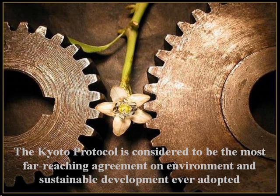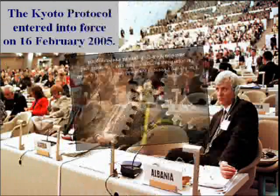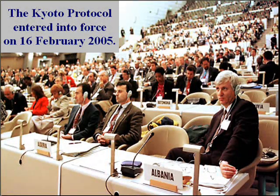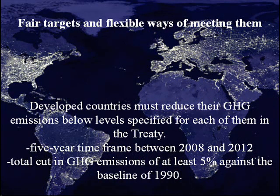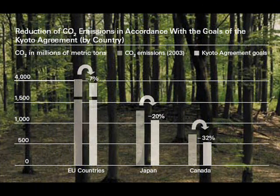However, any treaty not only has to be effective in tackling complicated worldwide problems, it must also be politically acceptable. Most of the world's countries eventually agreed to the protocol, but some nations chose not to ratify it. Following ratification by Russia, the Kyoto Protocol entered into force in February 2005. The Protocol requires developed countries to reduce their greenhouse gas emissions below levels specified for each of them in the treaty. These targets must be met within a 5-year time frame between 2008 and 2012, and add up to a total cut in greenhouse gas emissions of at least 5% against the baseline of 1990.